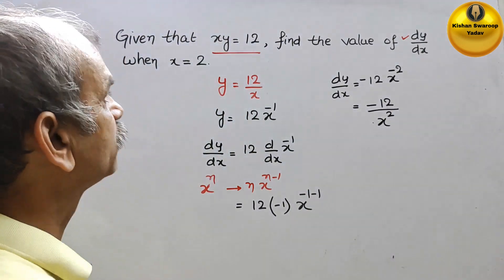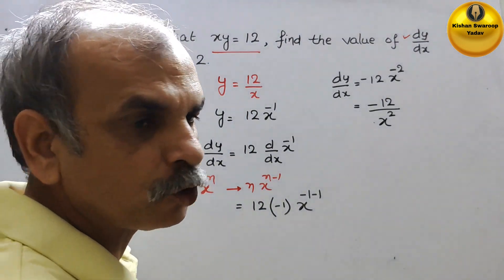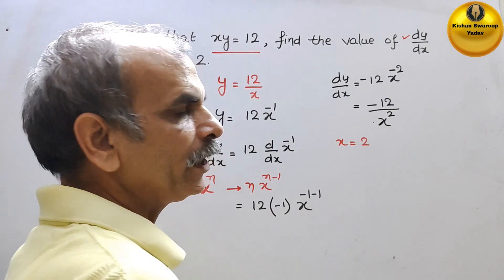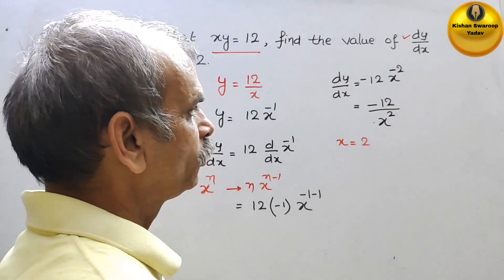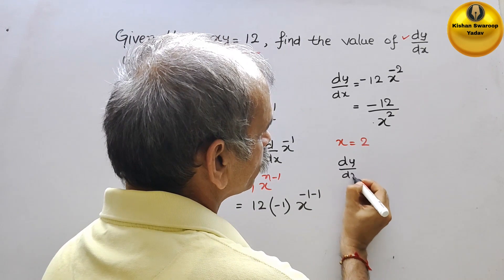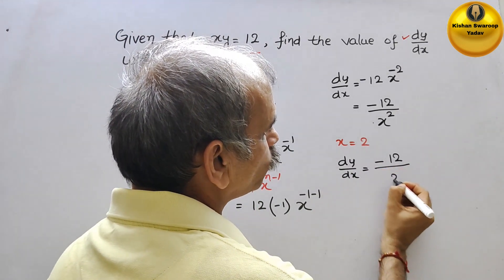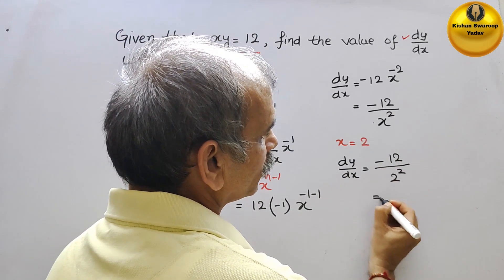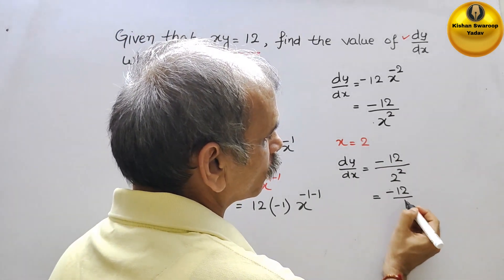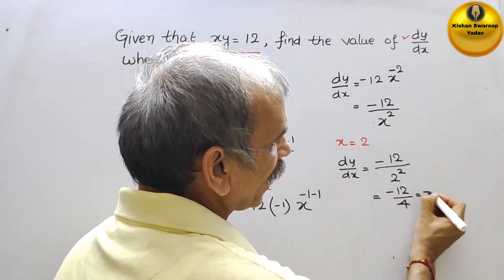Now they have given when x is equal to 2, so substitute that value. We will get dy by dx is equal to minus 12 by 2 square, that is equal to minus 12 by 4. Simplifying, you will get minus 3.